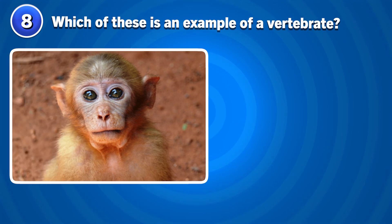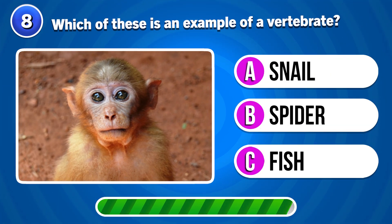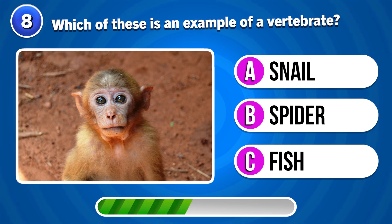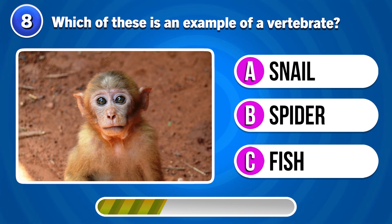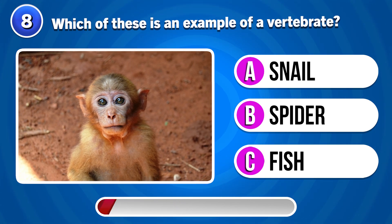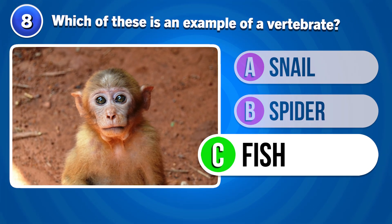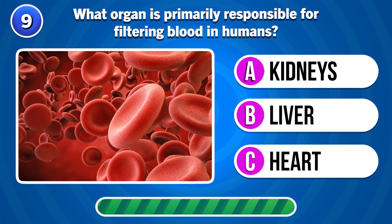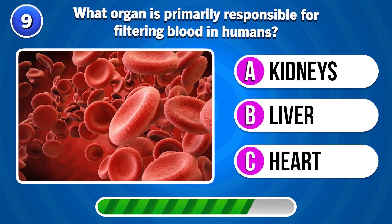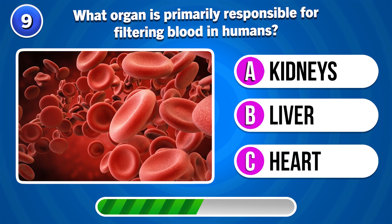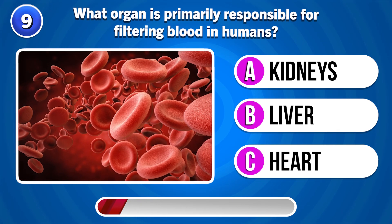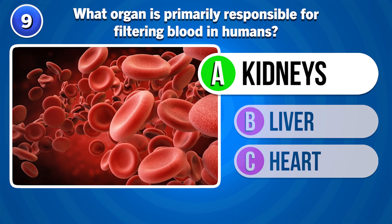Which of these is an example of a vertebrate? What organ is primarily responsible for filtering blood in humans? Kidneys.